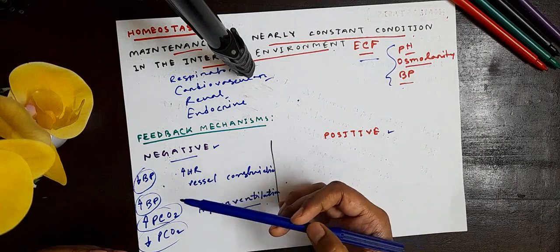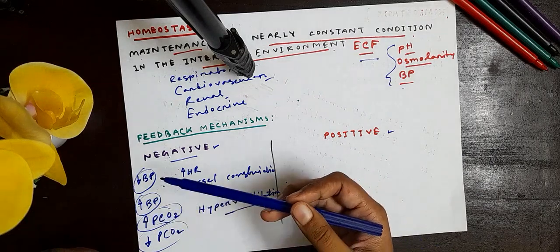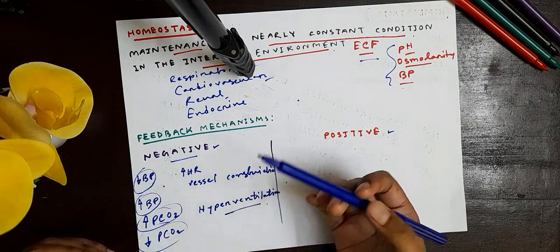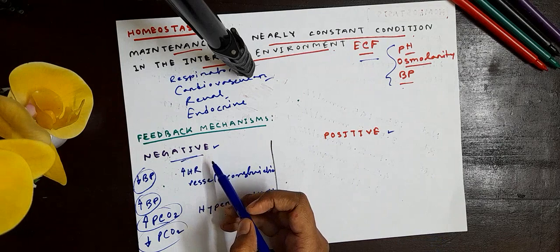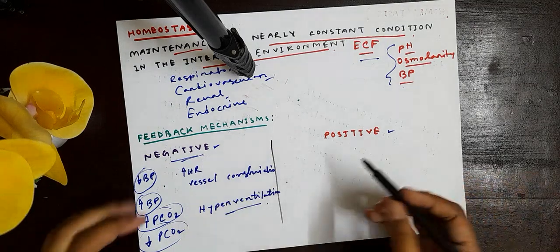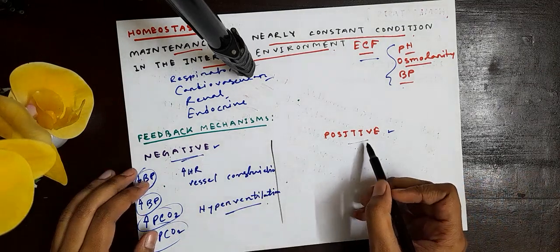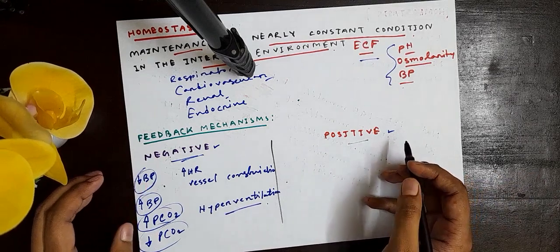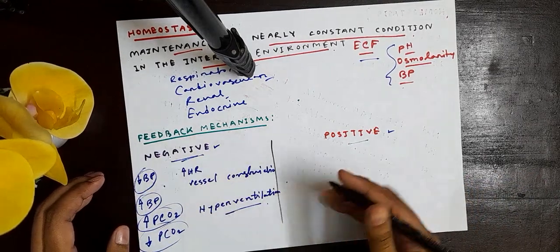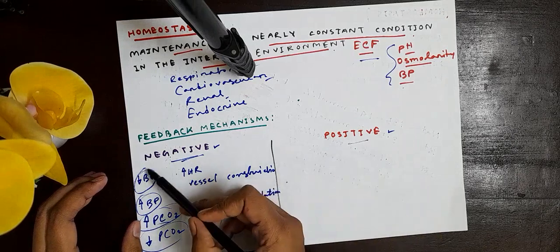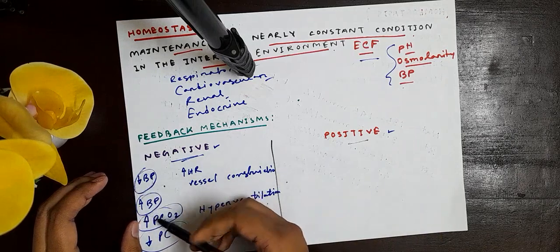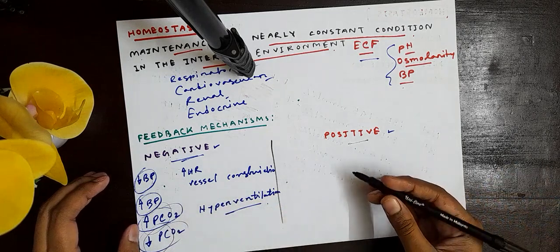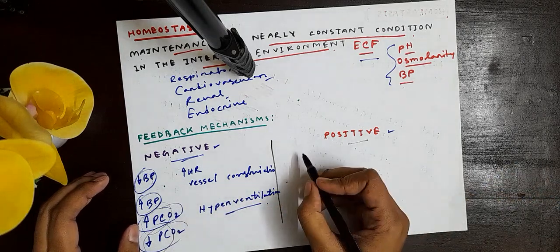This is the negative feedback mechanism — the two factors work in opposite directions, meaning the response counteracts the stimulus. The positive feedback mechanism works differently. Unlike negative feedback, which stops or reverses a change, positive feedback amplifies the original change further. We should see which factors are involved in the state, and positive feedback will increase those factors rather than oppose them.